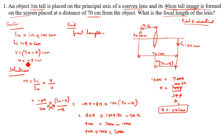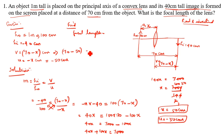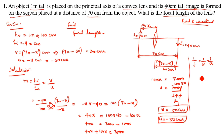Since X equals 50, U equals minus X, so U equals minus 50 centimeters. V equals 70 minus 50 equals 20 centimeters. Now applying the lens formula: 1/F equals 1/V minus 1/U, which gives 1/F equals 1/20 minus 1/(minus 50), so 1/F equals 1/20 plus 1/50.